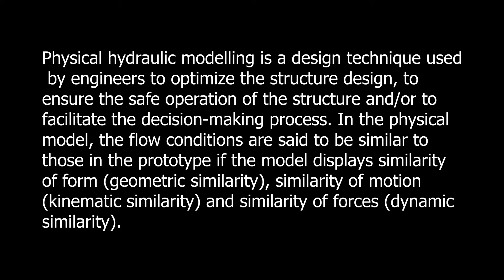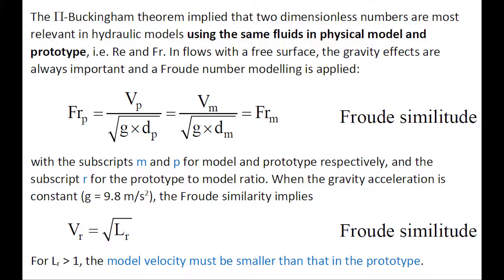In the physical model, the flow conditions are said to be similar to those in the prototype if the physical model displays similarity of form, of motion, and of forces. The Pi-Buckingham theorem implies that two dimensionless numbers are most relevant in hydraulic models using the same fluids in physical models and in prototype, namely the Froude and Reynolds number.